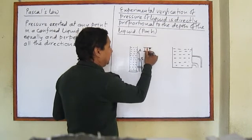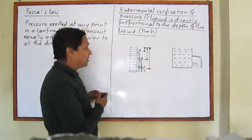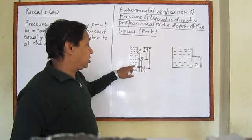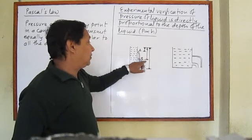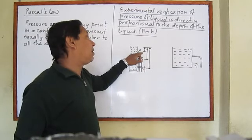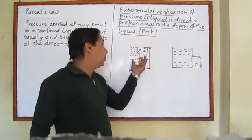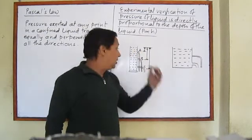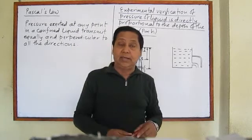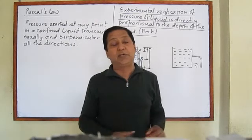This way, what can we see? If depth is greater, then pressure of water will be high. If depth is less, pressure of water will be less. If depth of liquid is least, then pressure will also be very least. This way experimentally we can verify that pressure of liquid is directly proportional to the depth of liquid.